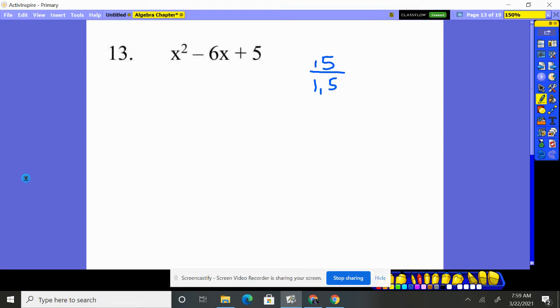Now notice that it's a positive 5. That means either both the 1 and 5 are positive or they're both negative. Since this is a negative, when we add them together we need a negative 6. That means we're going to make them both negative. That way when we add them together, we'll get negative 6. So this will be (x - 1)(x - 5).